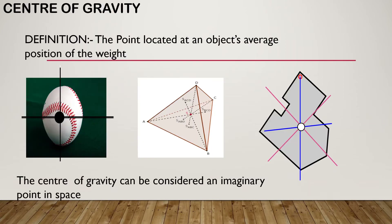Center of gravity is the point located at an object's average position of the weight. The center of gravity can be considered an imaginary point in space too. In other words, it is also called the center of an object's weight.